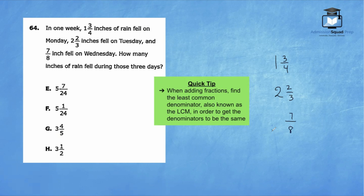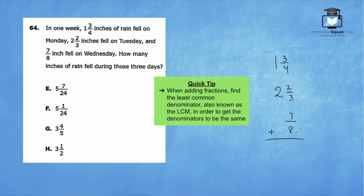When we add fractions, our goal is to get the least common denominator, also known as the least common multiple. Looking at denominators four, three, and eight, the common denominator is 24. We rewrite each fraction with a denominator of 24. Four times six is 24, so we multiply the numerator by six and get 18.